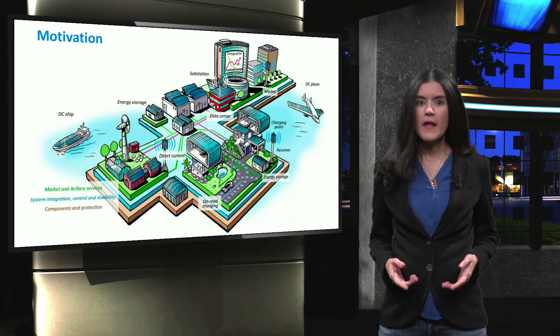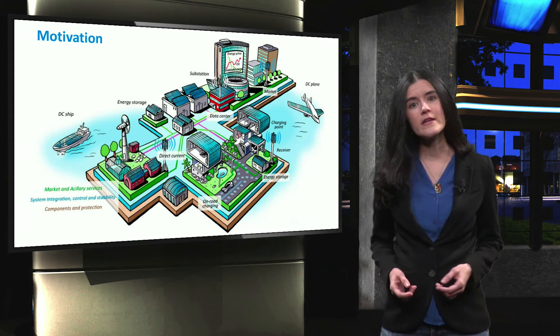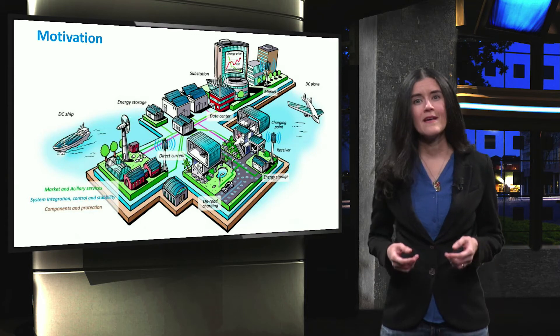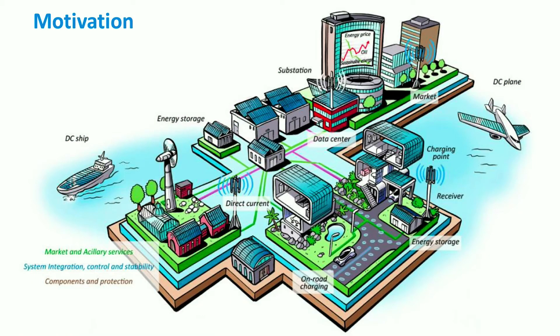Nevertheless, due to the intermittent and uncontrollable nature of renewable energy sources, their integration in power systems is currently a big challenge. There are different ways to address this challenge. During this course, you will particularly learn about the ways in which microgrids can be part of the solution. This will be possible thanks to the use of power electronics devices, the selection of appropriate system topologies and the application of suitable control and protection schemes in local, small-scale networks.